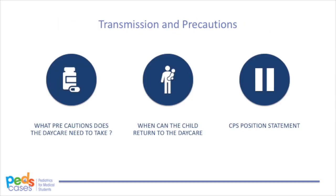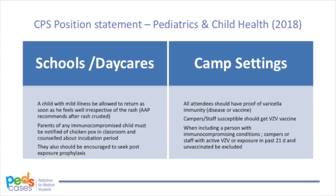How does transmission of varicella occur, and what precautions are needed? The vast majority of children with varicella are managed as outpatients. One of the most important questions for families is when the child can return to school or daycare. The Canadian Paediatric Society provides guidelines in its position statement updated in 2018. The CPS recommends that the child with mild illness should be allowed to return to school as soon as he or she feels well, irrespective of the crusting of the rash. The reason is that the child is most infectious before the onset of the rash, and there may be other children in the class already incubating varicella, so there is minimal advantage to keeping them home after the rash appears.